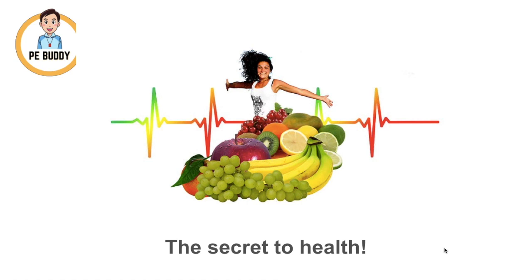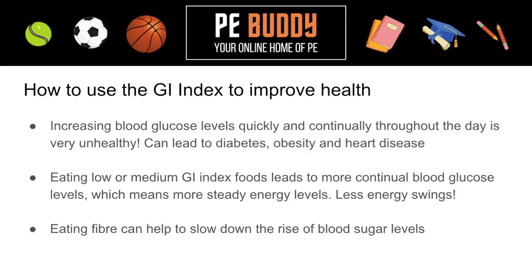Why is this healthier? Let's see why the GI index is the secret to health. Increasing blood glucose levels quickly and continually throughout the day is very unhealthy — in fact, it can lead to diabetes, obesity, and heart disease. To stop this, we want to eat low or medium GI foods, as this gives us a more continual blood glucose level and more steady energy levels. Another thing we can do is eat fibre, which slows down the rise of blood glucose levels.